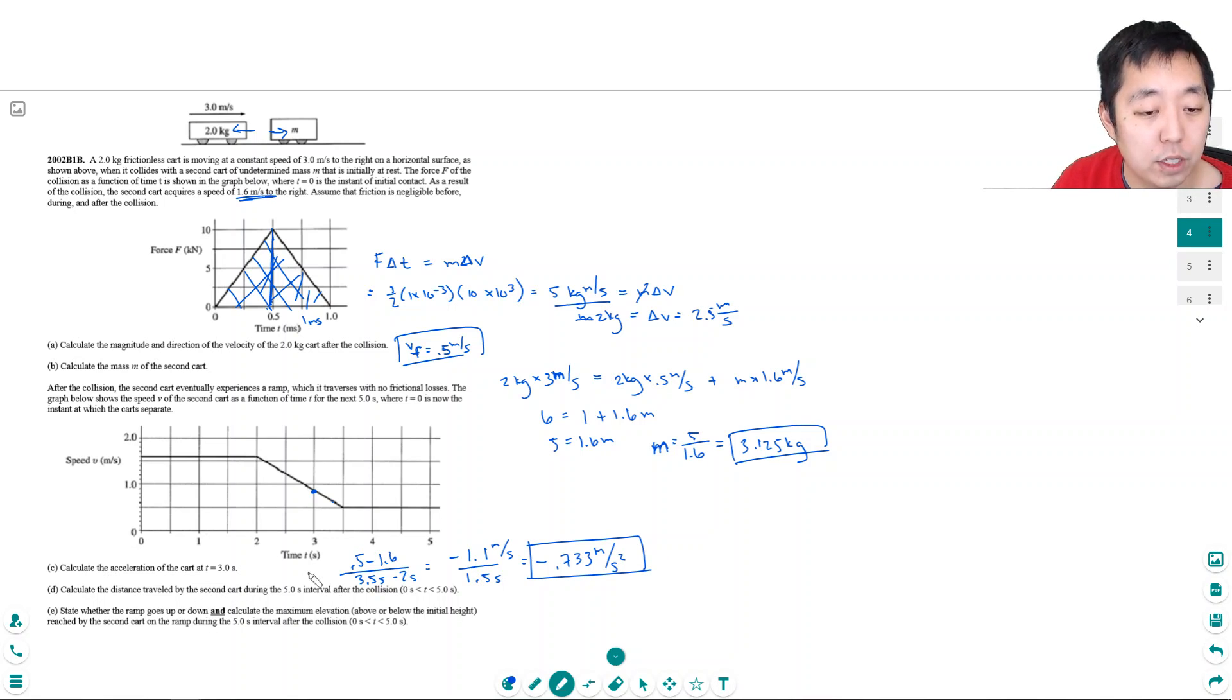Calculate the distance traveled by the second cart during the five second interval after the collision. There's a few ways you can do it through kinematic equations, or it's technically the area under this curve. During this time window, the distance traveled is just velocity times time because it's at a constant velocity. So this portion is 1.6 meters per second times two seconds, which is 3.2 meters. If you note, that's equal to the area of this rectangle.